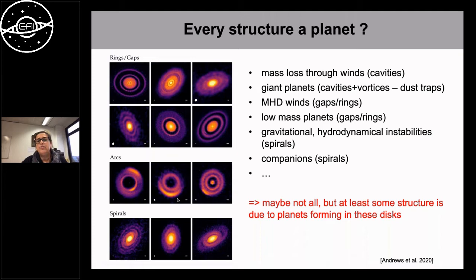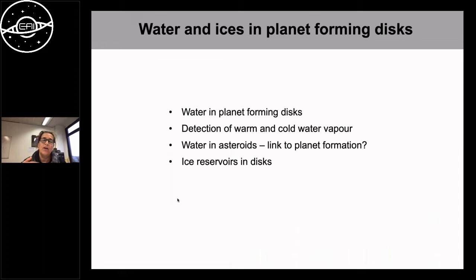In some cases giant planets can carve cavities, cause vortices, and capture dust into asymmetric over-densities. Maybe not all structures are due to planets, but in many cases planet formation seems well under way when we observe these disks. With that general introduction, I want to focus on what we did in recent years to understand how water is distributed in planet-forming disks and how it relates to asteroids, comets, and the solar system.